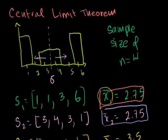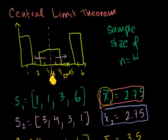In the last video, we learned about what is quite possibly the most profound idea in statistics — the central limit theorem. The reason why it's so neat is we can start with any distribution that has a well-defined mean and variance. What I can do is take samples of, say, size 4.